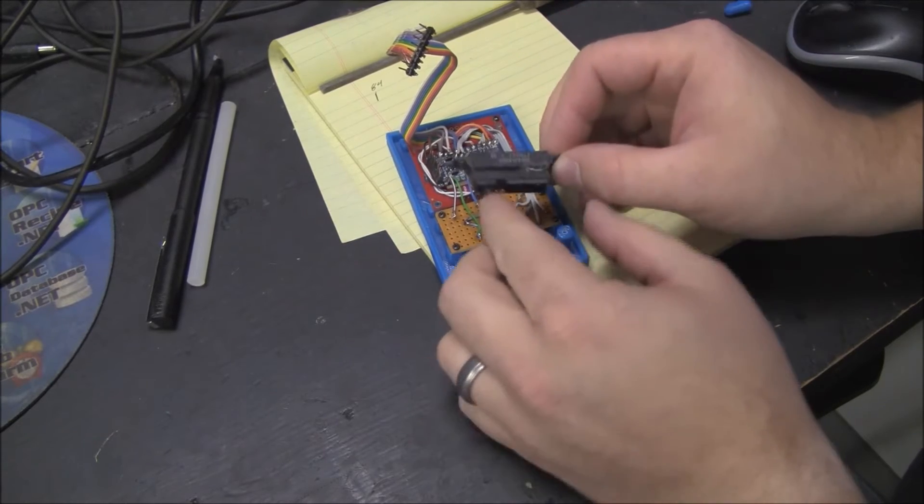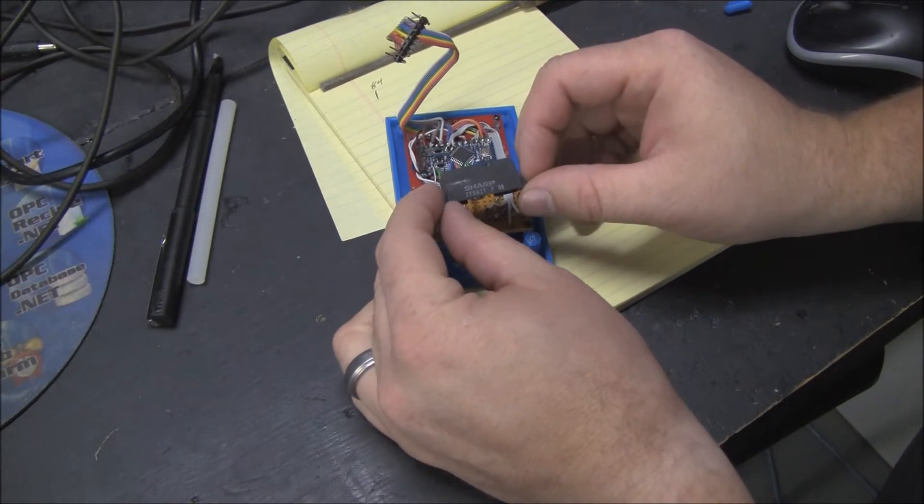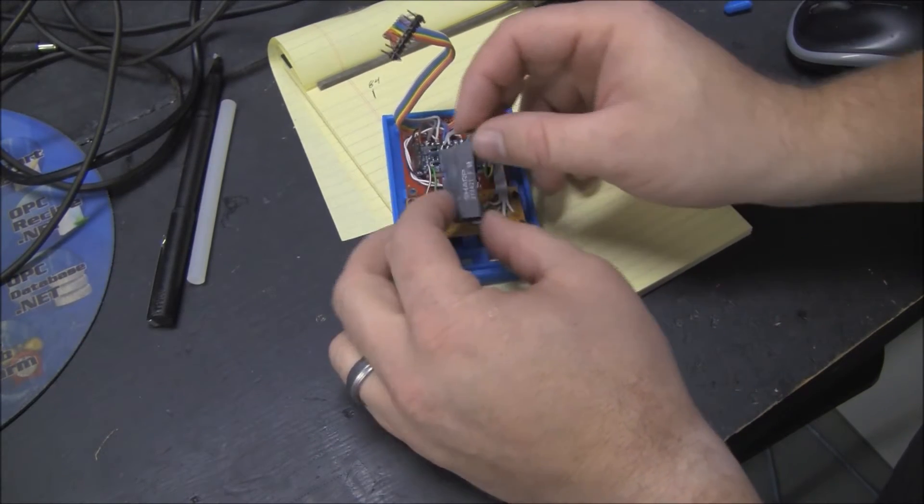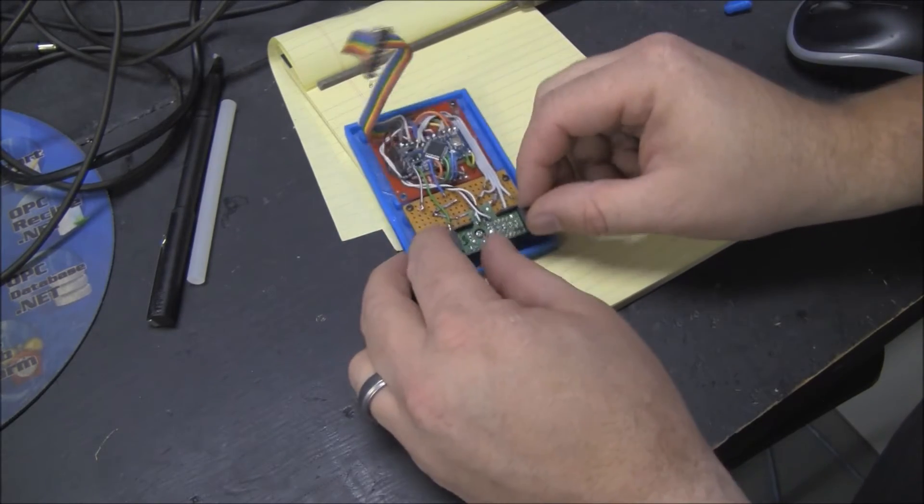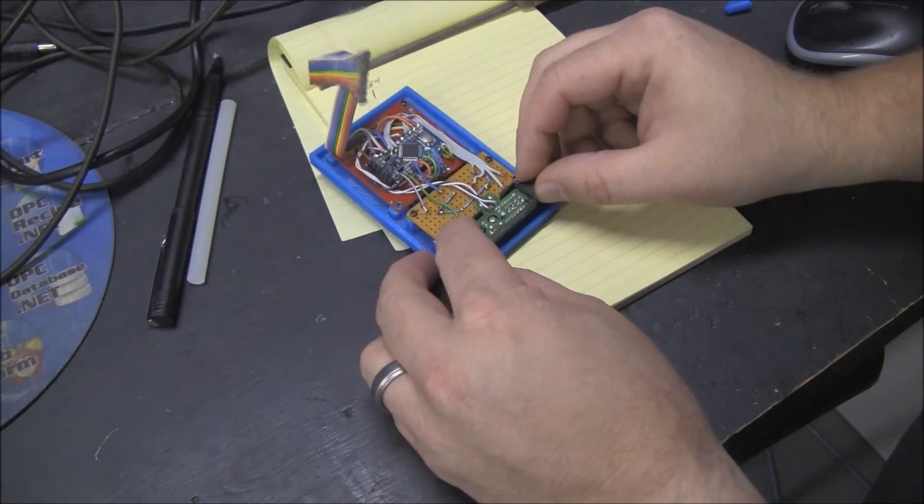This is the sharp infrared distance sensor. It provides an analog value for distance. And then you give it power and ground, and that's all you need.